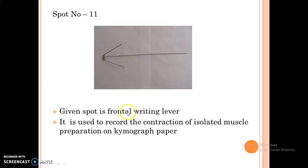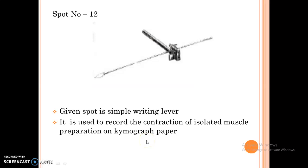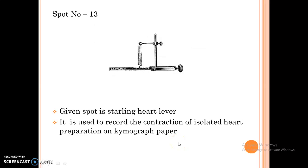The next spot is a lever used to record the contraction of isolated muscle preparations on the chemograph paper. The next spot is Starling heart lever. It is used to record the contraction of isolated heart preparations on the chemograph paper.